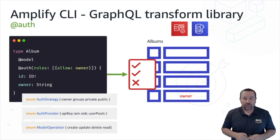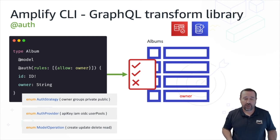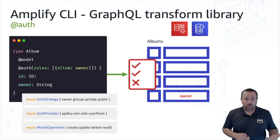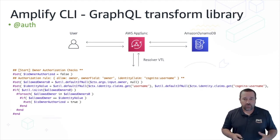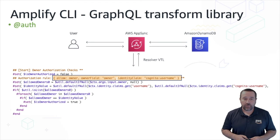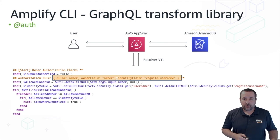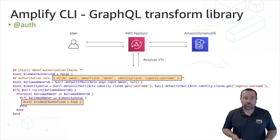Once we've defined this in our schema, Amplify translates all of our schema into CloudFormation templates and other assets and deploys them to the cloud. One of the things Amplify does for us with the auth directive is create the resolver mapping templates required in AppSync to validate requests. These templates are in VTL — Velocity Templating Language. What they do is validate that the username sent through from the identity claim from a client matches the owner field in the data. If there is a match, the user is authorized and the data can be returned to the client.